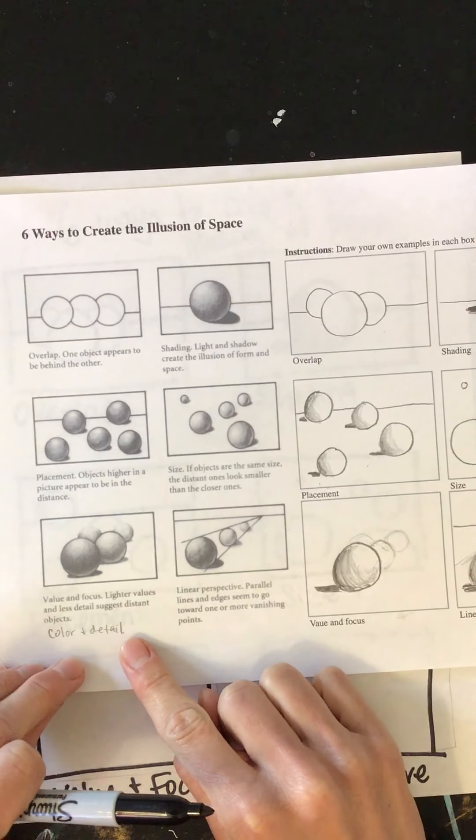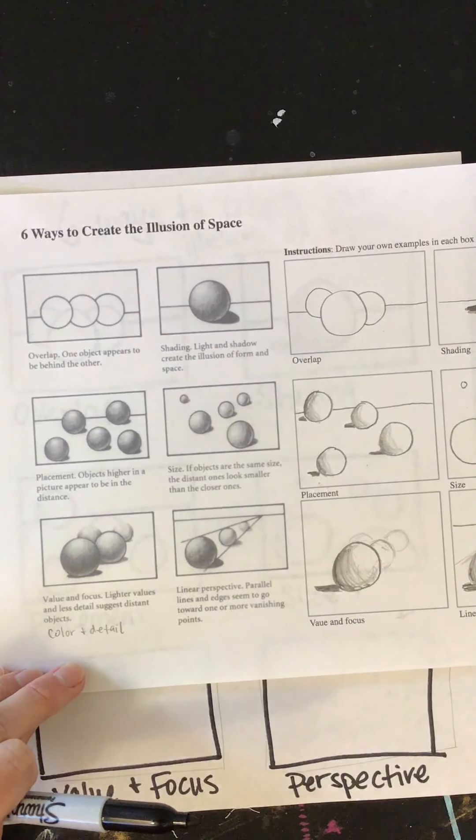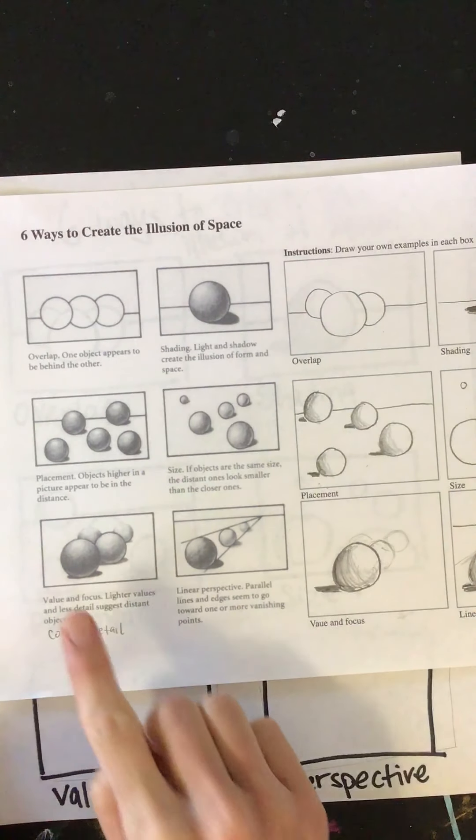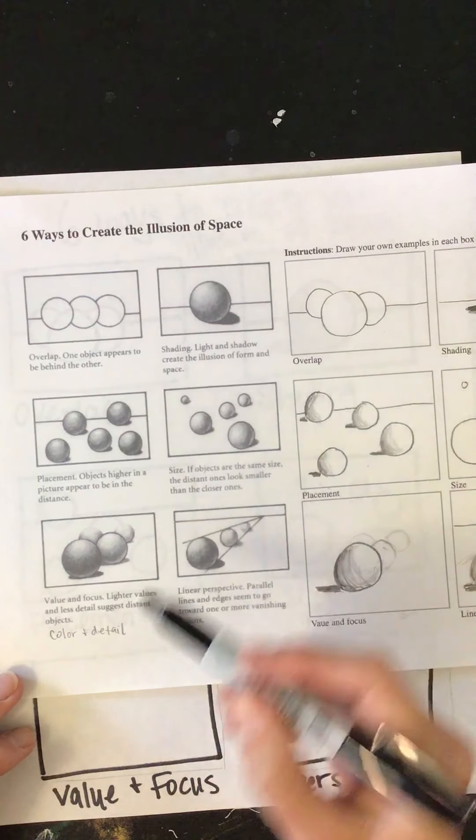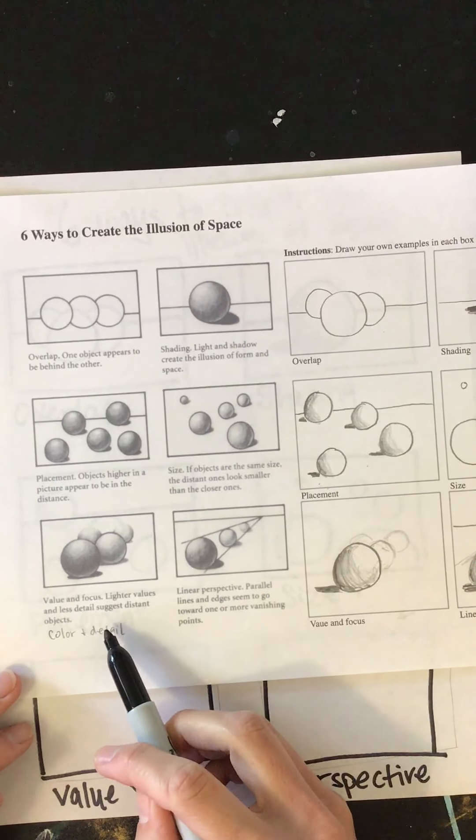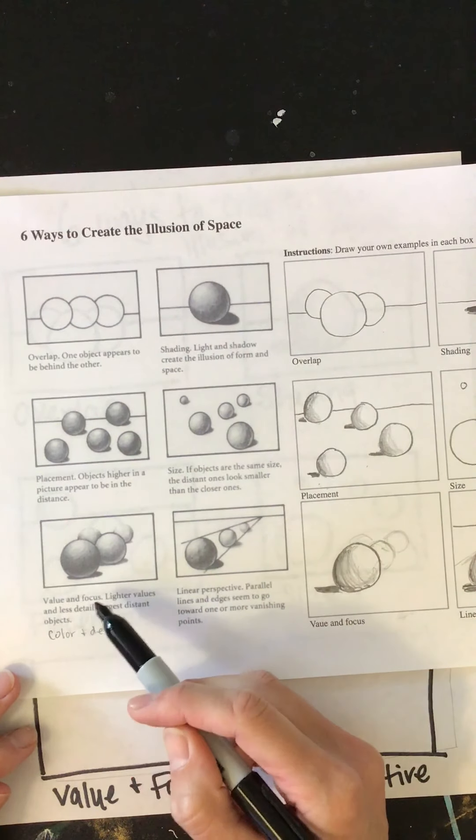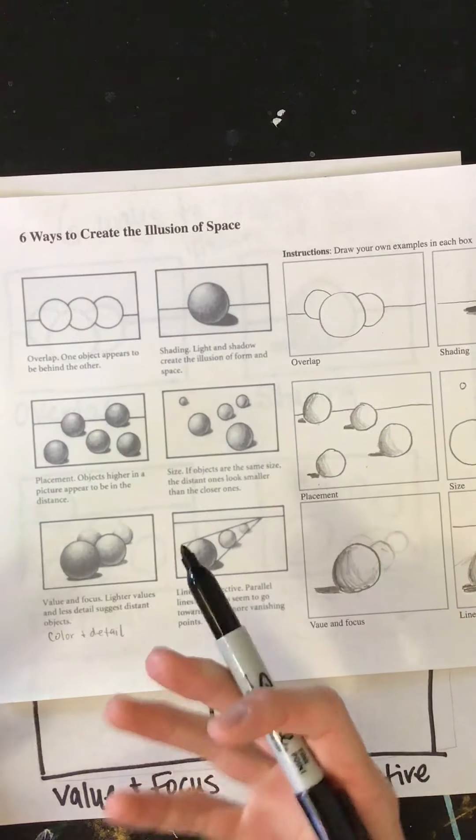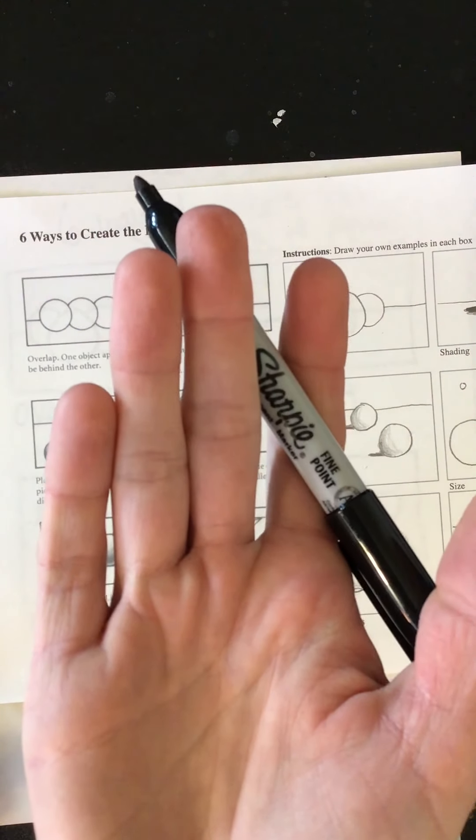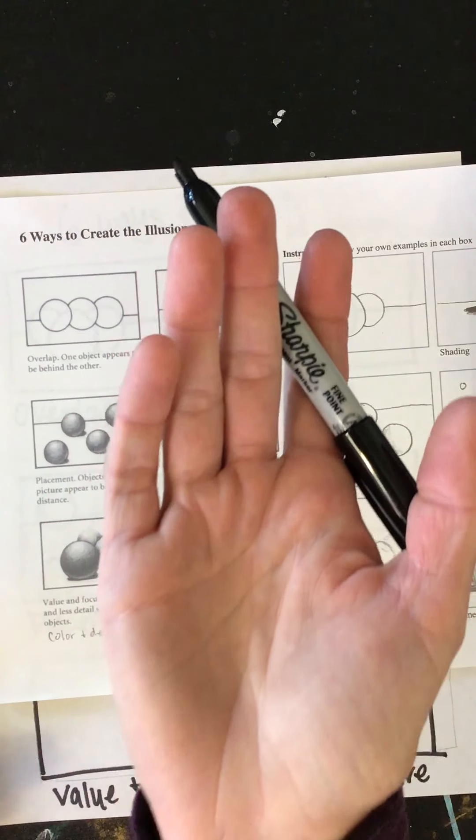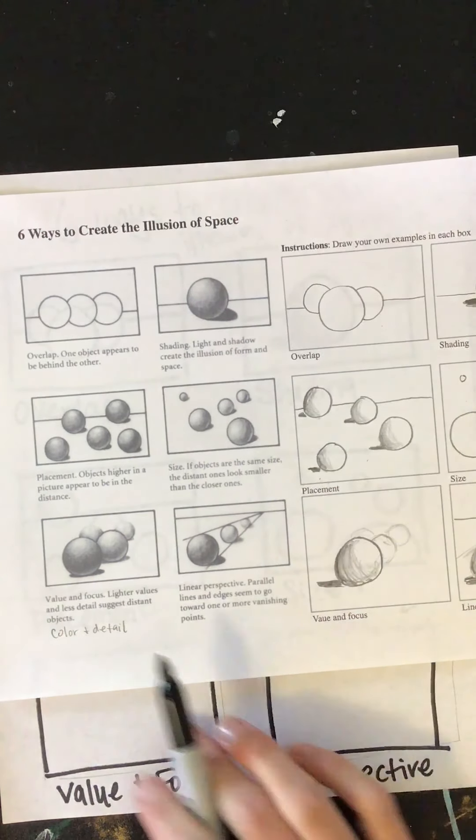This next one, value and focus. So value, if you remember, has to do with the light to dark, and it creates an illusion of a sphere. That's what we did with shading. But also has to do with detail. So detail has to do with focus. So the more detail you have, the closer it appears, right? So my hand is getting closer to the camera, you can see the details of my hand, the further away it is, the less details you see. So that's all I'm talking about.